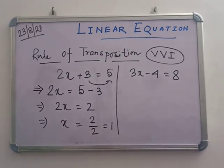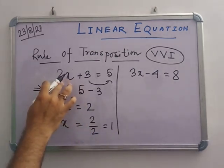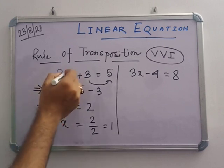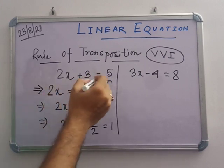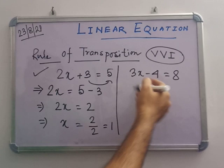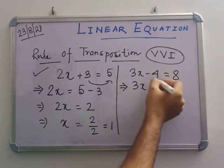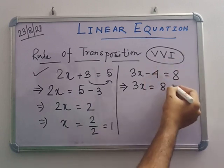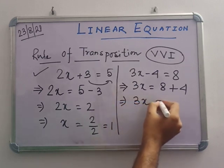To verify, put x equals to 1 back into the equation: 2 into 1 plus 3 equals 2 plus 3 equals 5. It is verified. Similarly, for 3x minus 4 equals to 8: the minus 4 moves to the right side and becomes plus 4. So 3x equals to 12.